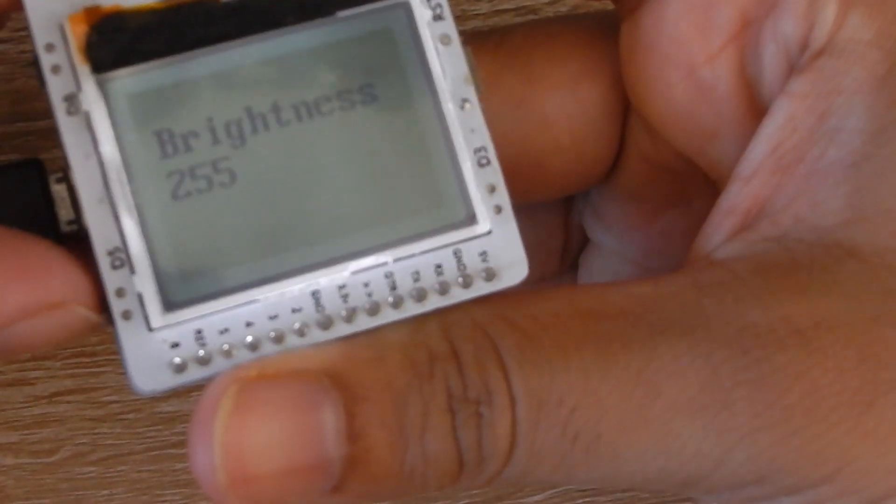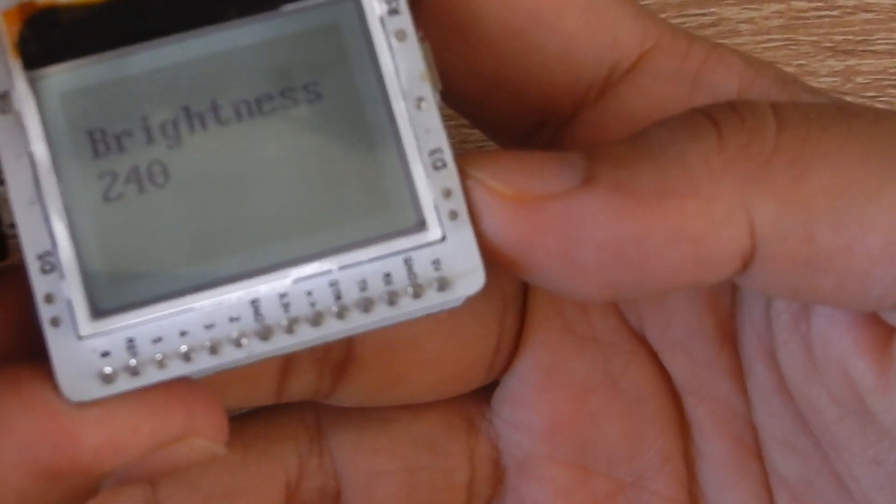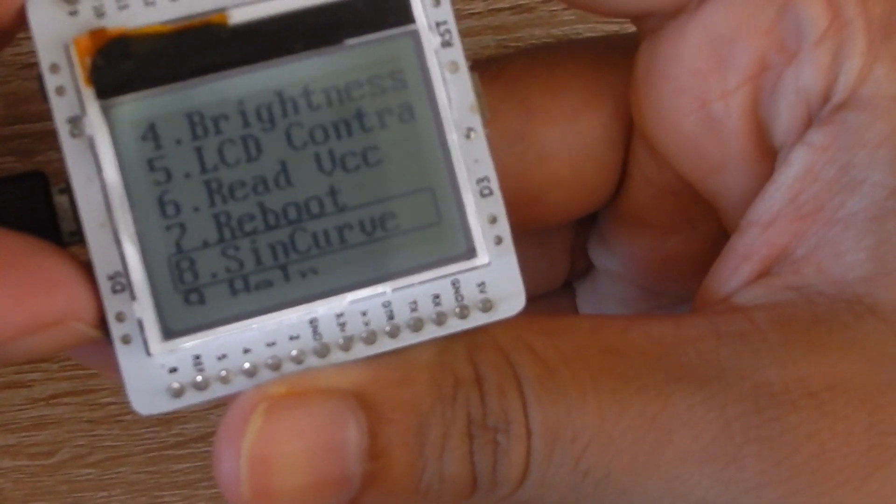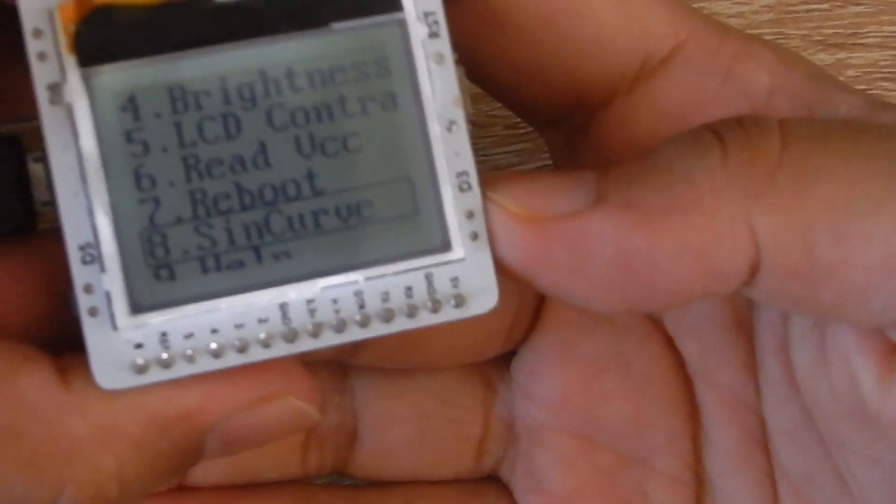If I press d3 then I am going back. There is a sun sign curve example.